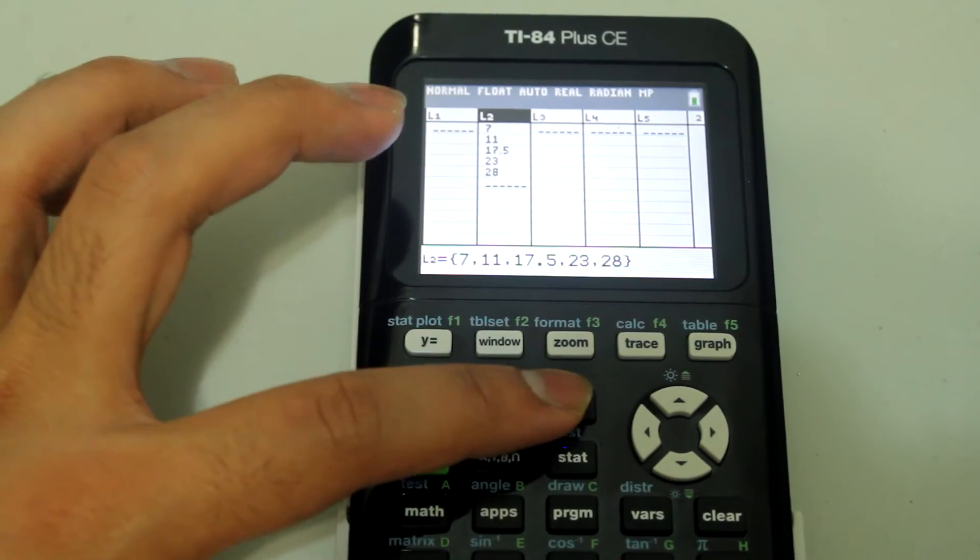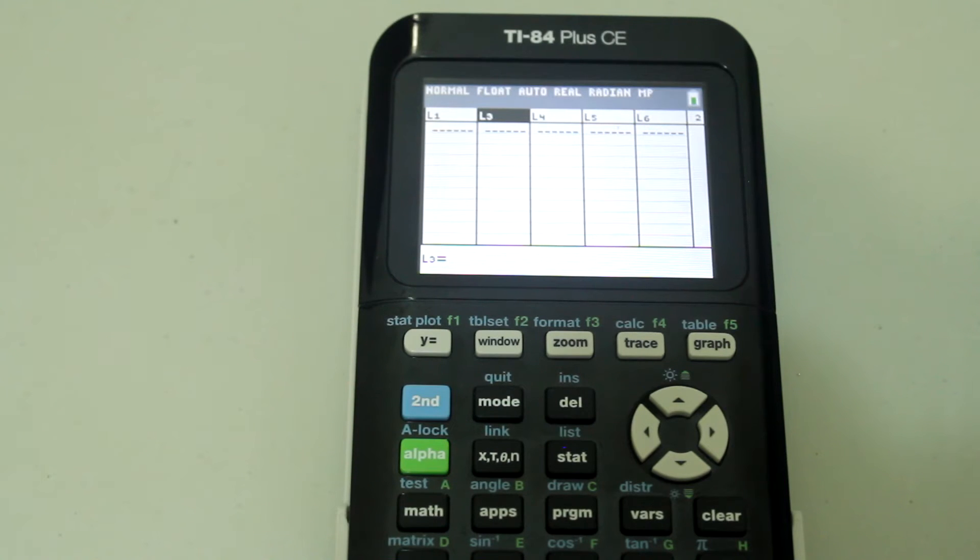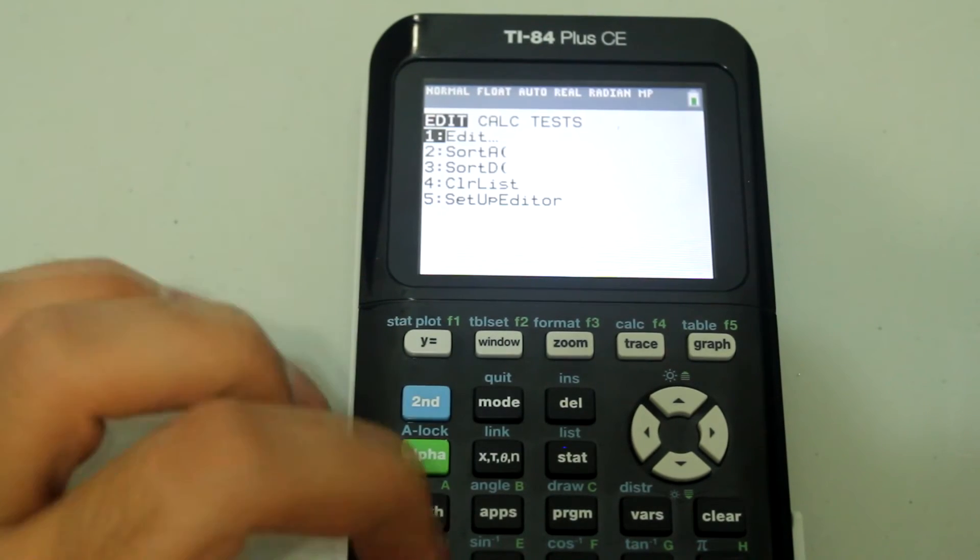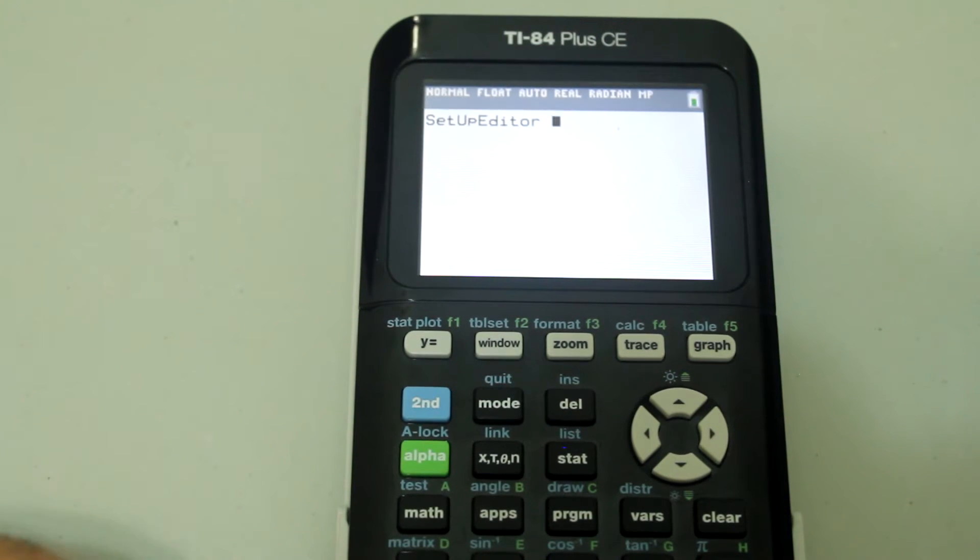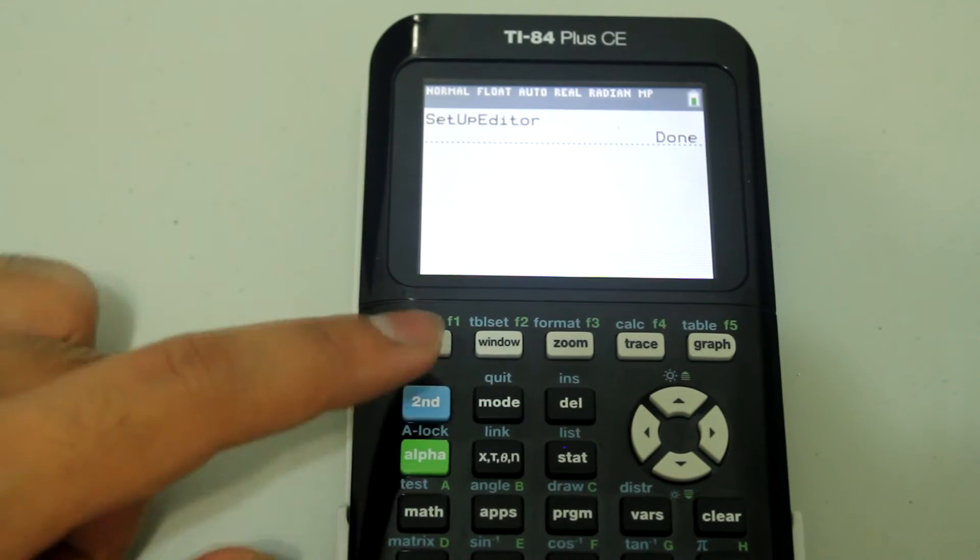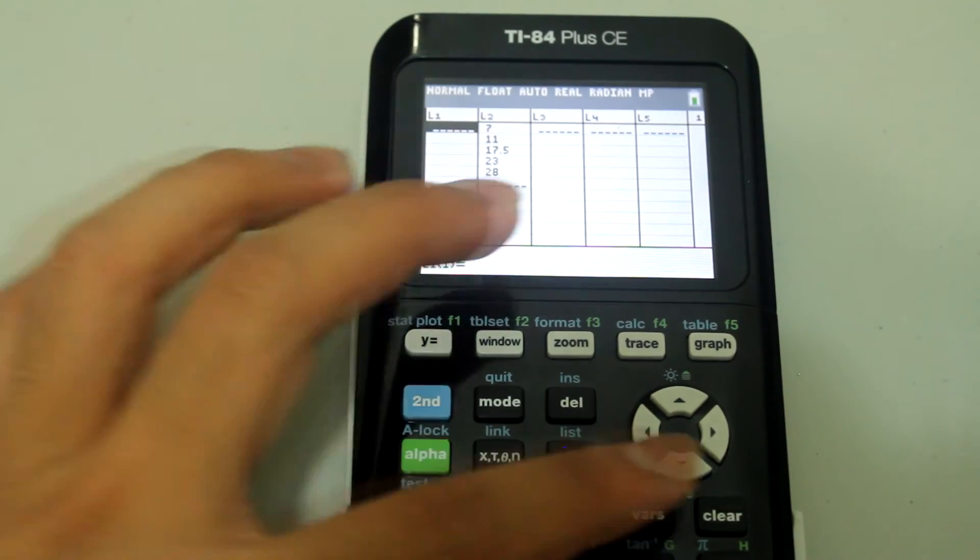However, if you hit the delete button, it deletes the entire list and now we don't see L2 anymore. If you wanted to restore that, what you can do is hit the STAT button, select number 5 to where it says set up editor, so just hit number 5 and hit enter and it should say done. Now if you go into STAT and go into edit again, L2 reappears.